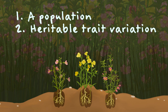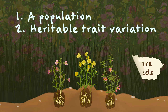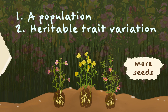Two, you need heritable trait variation. These are trait differences that come from differences in genes. We've already seen the yellow flowers trait. Populations vary in lots of other ways, too. In this one, there's also a more seeds trait and a big thorns trait.